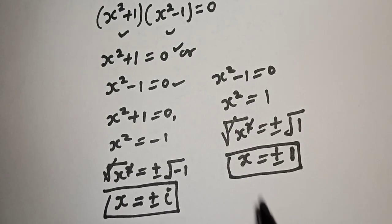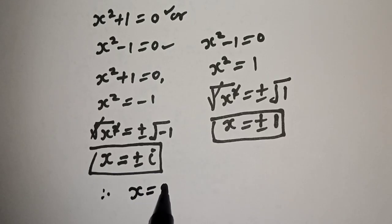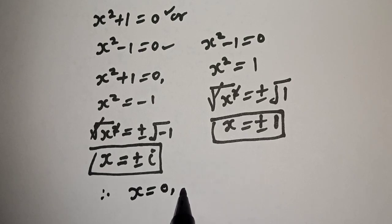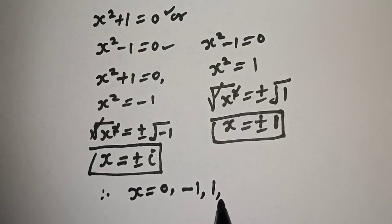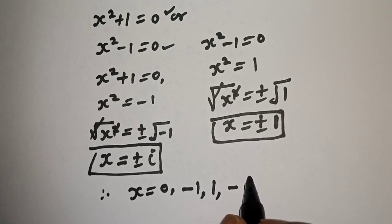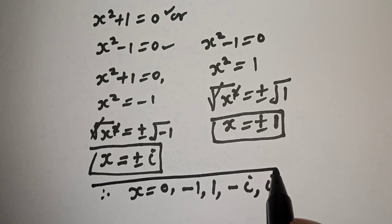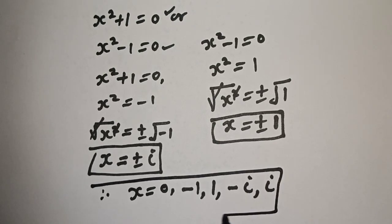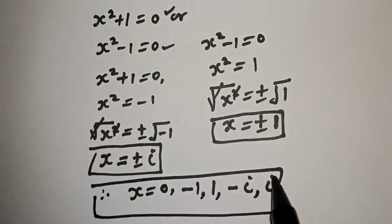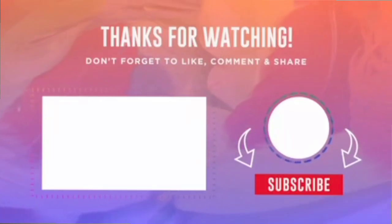Therefore, our final answers are x is equal to 0, minus 1, 1, minus i, and i. If you enjoyed the class, please don't forget to like, share, comment, and subscribe. Thank you.